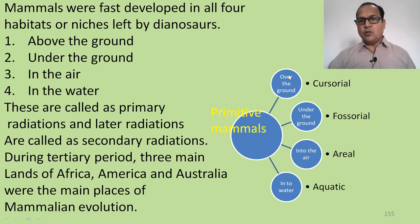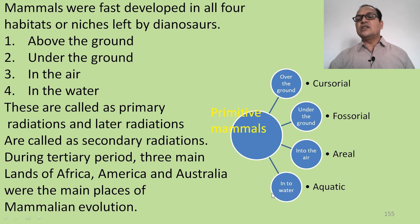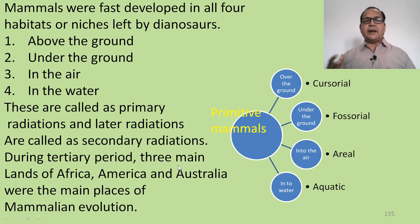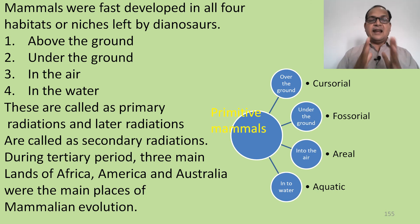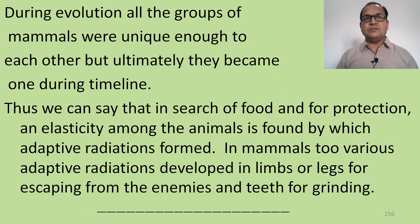From over the ground, cursorial mammals originated; from under the ground, fossorial mammals originated; to the air, aerial mammals like bats originated; and to the water, aquatic mammals like whales and seals originated. These are called primary radiations. Later radiations are called secondary radiations. During the Tertiary period, three main landmasses — Africa, America, and Australia — were the main places of mammalian evolution.